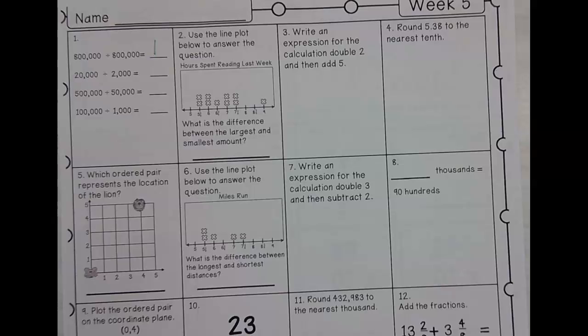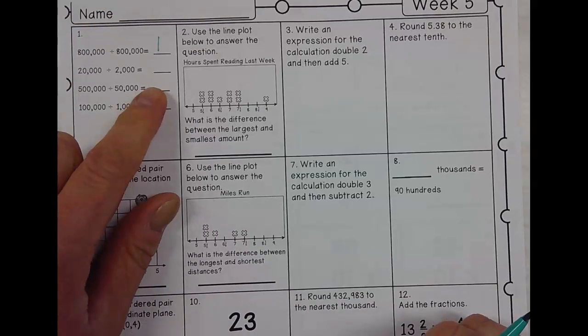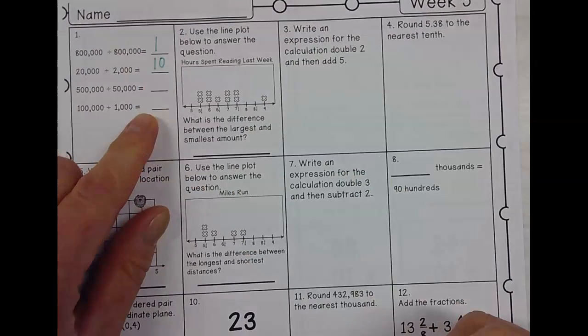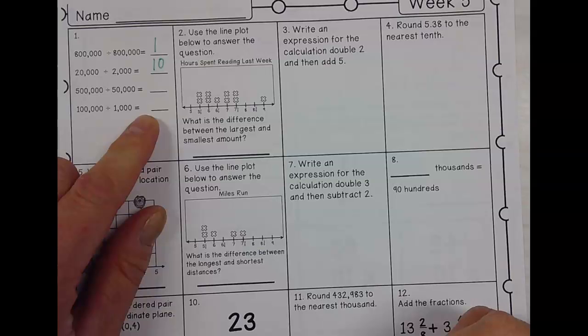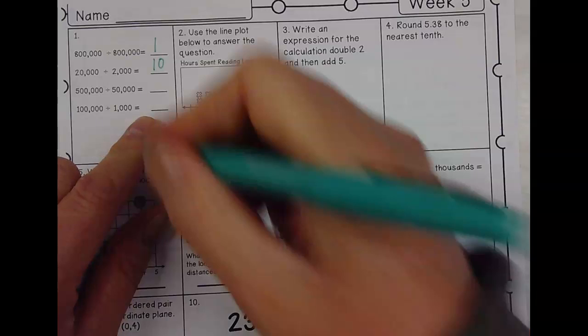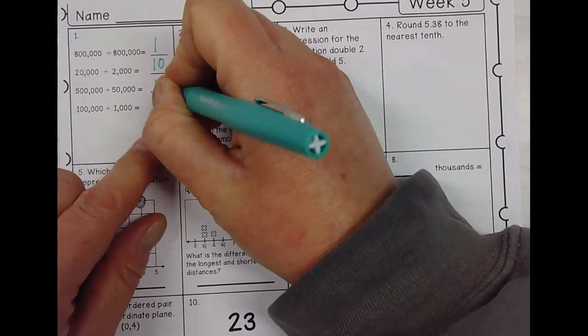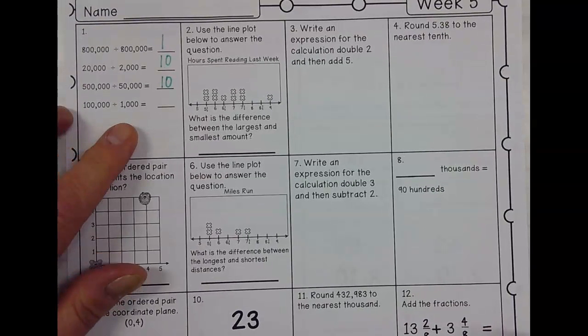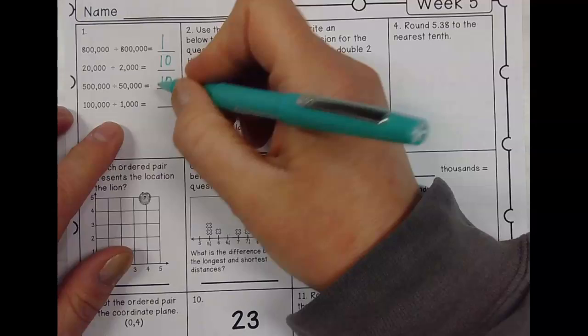The next one says 20,000 divided by two. 20,000 divided by two is 10. 500,000 divided by 50,000. 500,000 divided by 50,000 is 10. And 100,000 divided by 1,000 is 100.